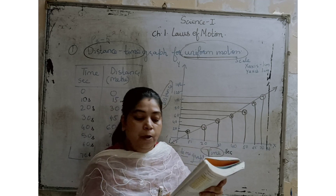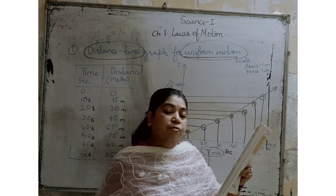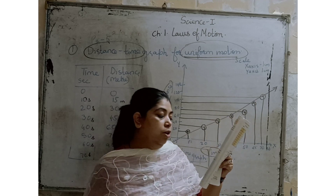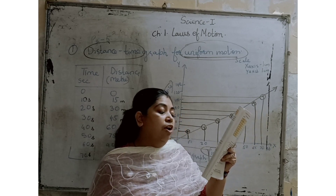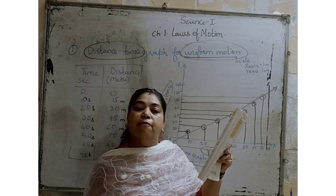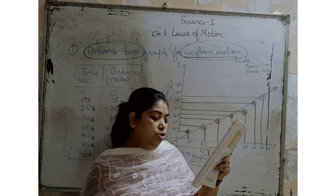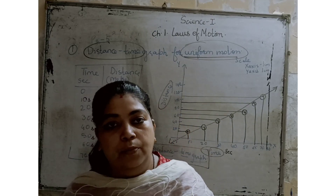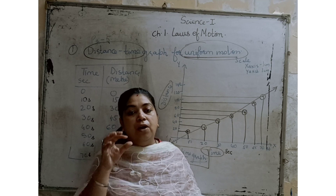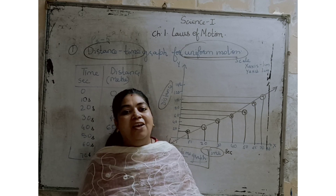Next we have a small activity on the velocity-time graph for uniform velocity. A train moves with a uniform velocity of 60 kilometers per hour for five hours; the velocity-time graph for this uniform motion is shown in Figure 1.7. We have three important questions from this graph to solve, which we will study in our next video. Hope you understood today's two graphs and definitions. Have a good day — God bless you all, thank you.